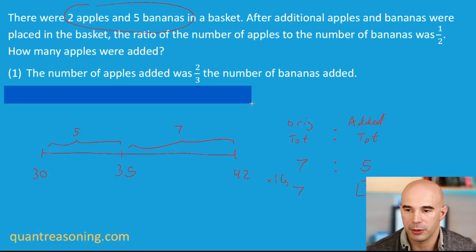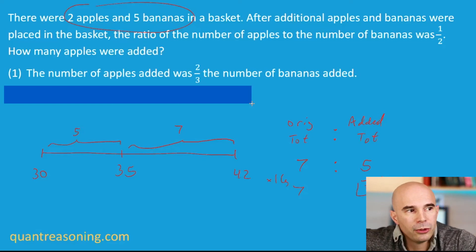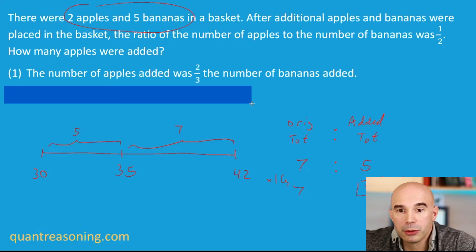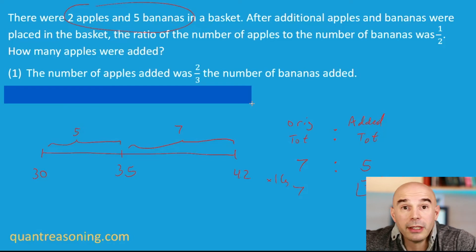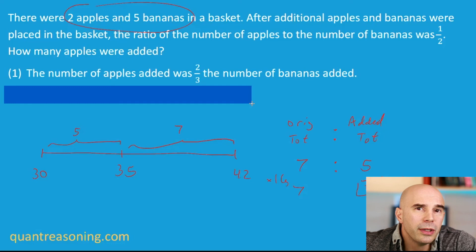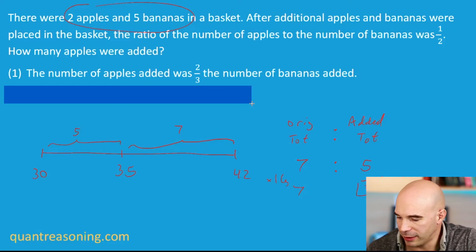My takeaway from all of this — I learned something new today too: to take a few seconds to think about what ratios I want to work with — apples to bananas, apples to total, or bananas to total. I initially went with apples to bananas because everything was stated that way. But then statement two gave us a total number, and because of that I think I should have gone with apples to total instead. That's my takeaway.